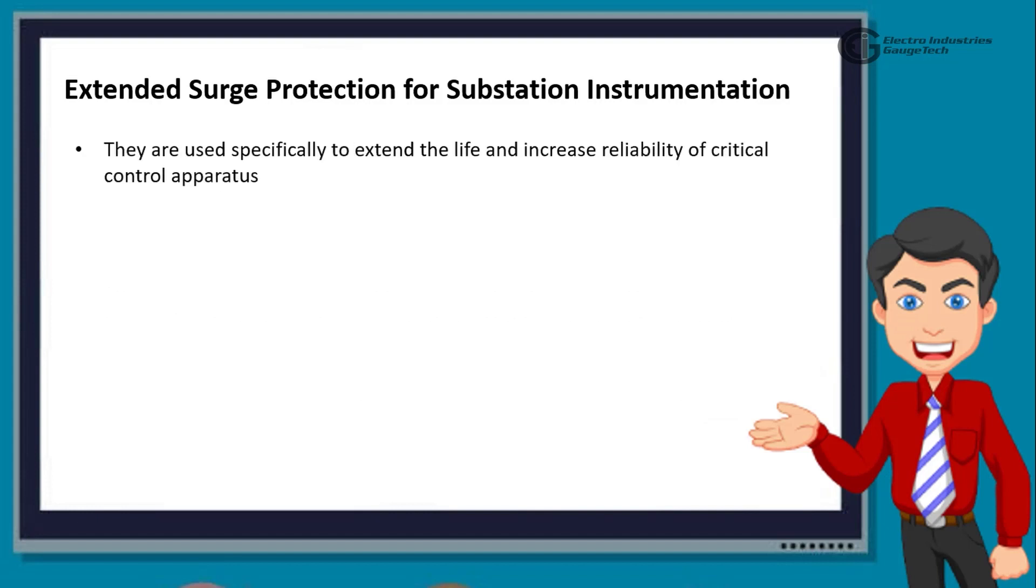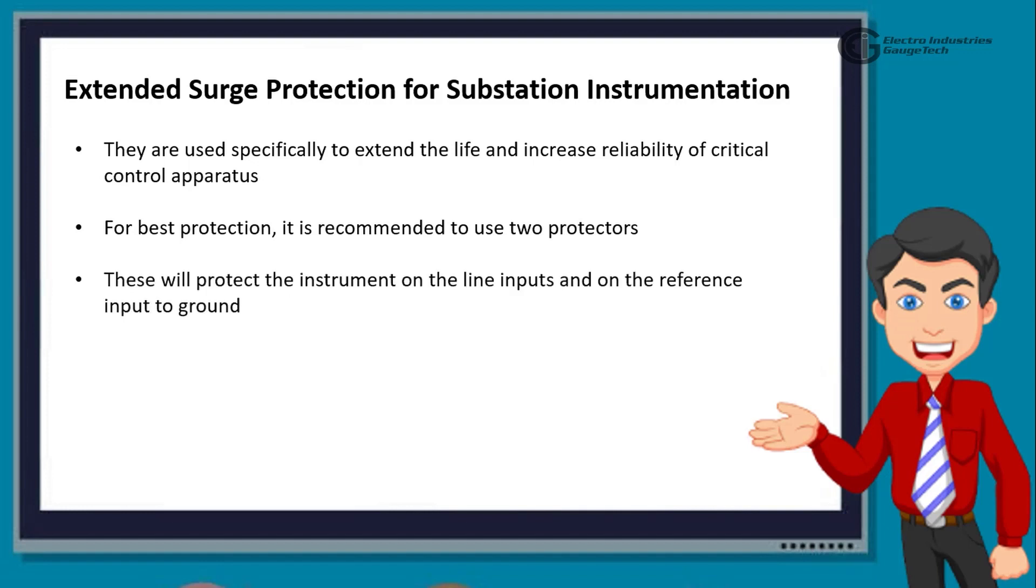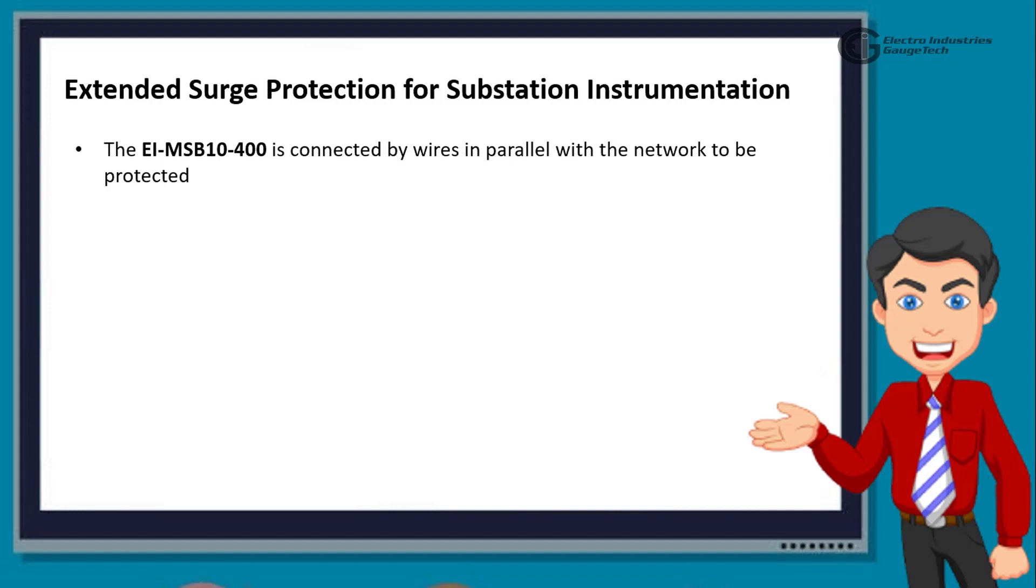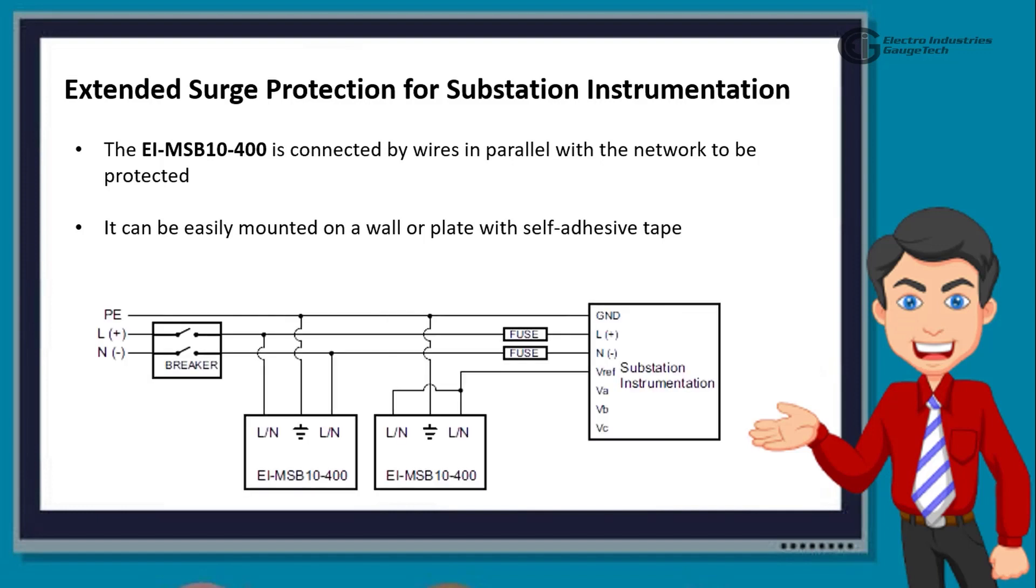They are used specifically to extend the life and increase reliability of critical control apparatus. For best protection, it is recommended to use two protectors. These will protect the instrument on the line inputs and on the reference input to ground. The protectors have LED indication to enunciate when the protection has worn out. The EIMS-B10400 is connected by wires in parallel with the network to be protected. It can be easily mounted on a wall or plate with self-adhesive tape. The image here shows the wiring schematic for extended surge suppression suitable for substation instrumentation.